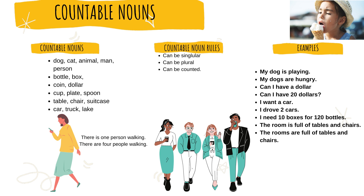Now we're going to look at countable nouns. Countable nouns are nouns you can count — like dog, cat, animal, man, person. You can have 10 dogs, five cats, 20 animals, three men, and 20 people. Bottles and boxes — yes, you can count them. You can have 20 bottles or 50 boxes. Coins like the dollar or the euro or the yen, or many different other kinds of currency — the British pound, a dinar or a lira. Yes, you can count them. They're countable.